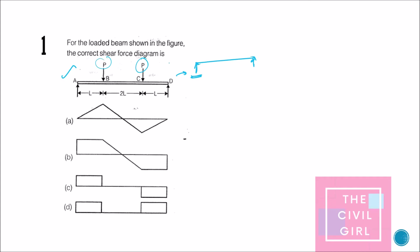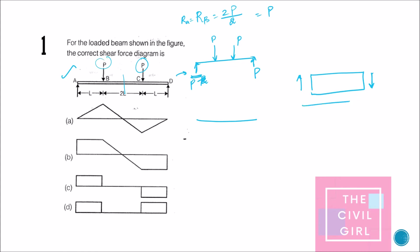The total load is 2P and since they are symmetrical, Ra is equal to Rb which is equal to 2P/2, so Ra = P = Rb. Now looking at the shear force diagram — the sign convention is: looking from the left side, upward is positive; looking from the right side, downward is positive. Starting from the left side, it is upward, therefore it is positive.